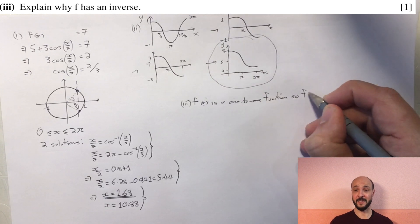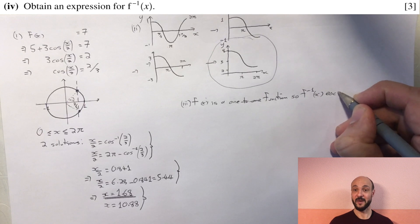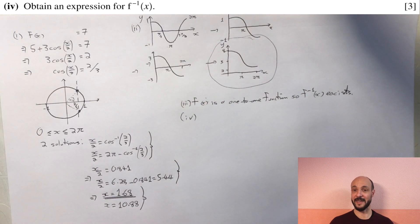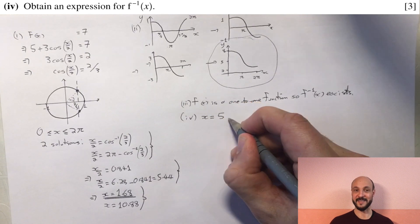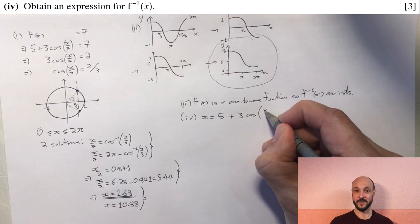And then we want an expression for the inverse of x. Now we have a technique for doing this. When we want to get the inverse of a function we can simply switch our variables, our x and our y, and rearrange the equation to make y the subject of the equation.